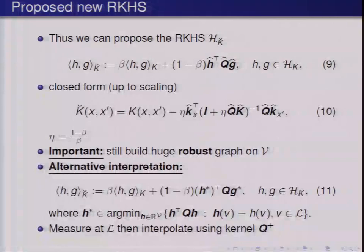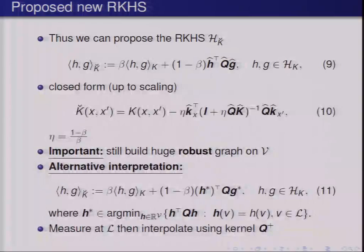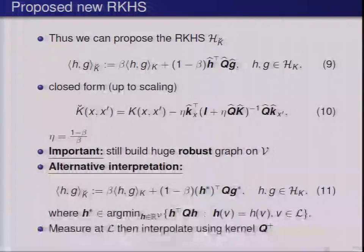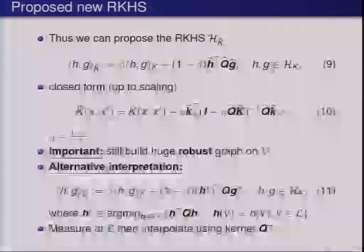An important point: we're still building this huge graph. If our original regularizer Q is a graph Laplacian, we're still building a huge graph on the set V. An alternative interpretation of the inner product in equation nine: it's equal to measuring H and G at the landmark points, and then interpolating those measurements to V using our kernel — the pseudo-inverse of Q. So once you've decided to measure points at a smaller subset, that's the best estimate of their value on the whole vertex set V, and we define the kernel using those interpolants — the smoothness of the interpolants.